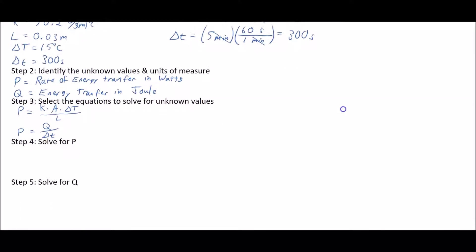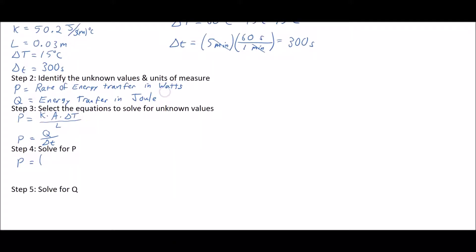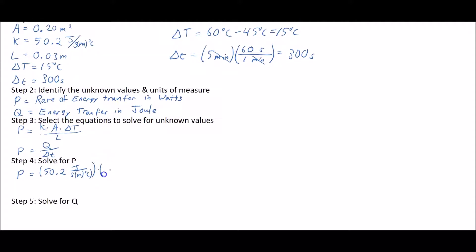To do that, first thing we had to solve for P. We take that first equation because we don't know Q, so we have to use the first equation and we just substitute the numbers in. So k was given up above, it's 50.2 joules per second meters degrees Celsius times the area 0.2 meters squared times the change in temperature which is 15 degrees Celsius.